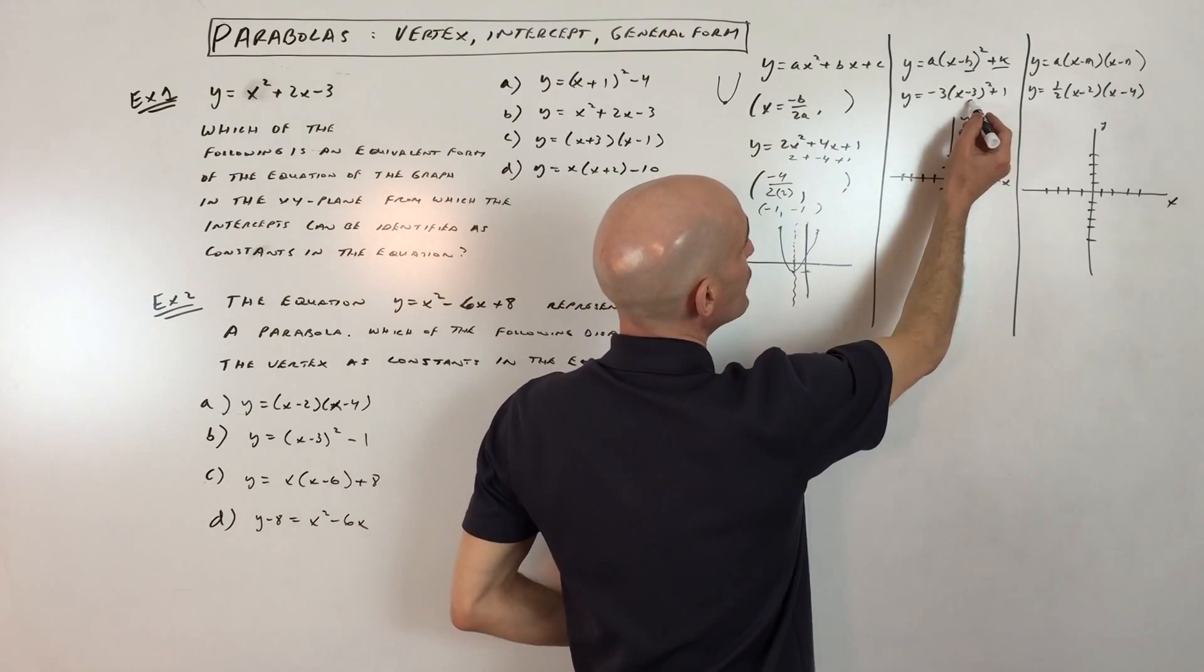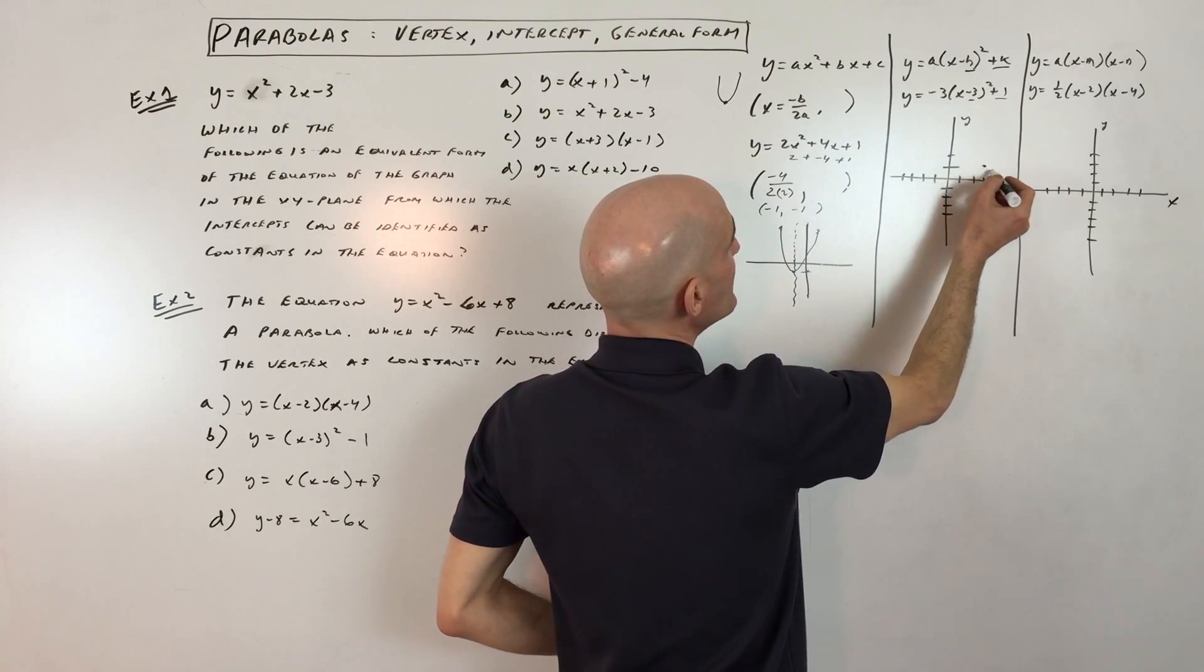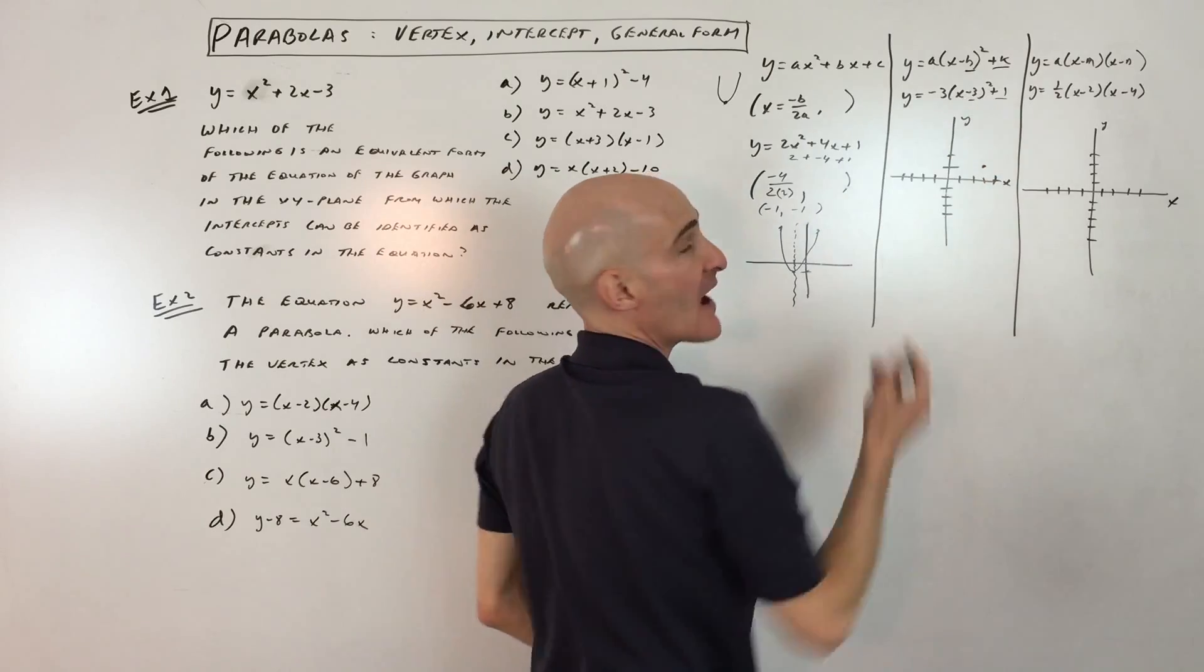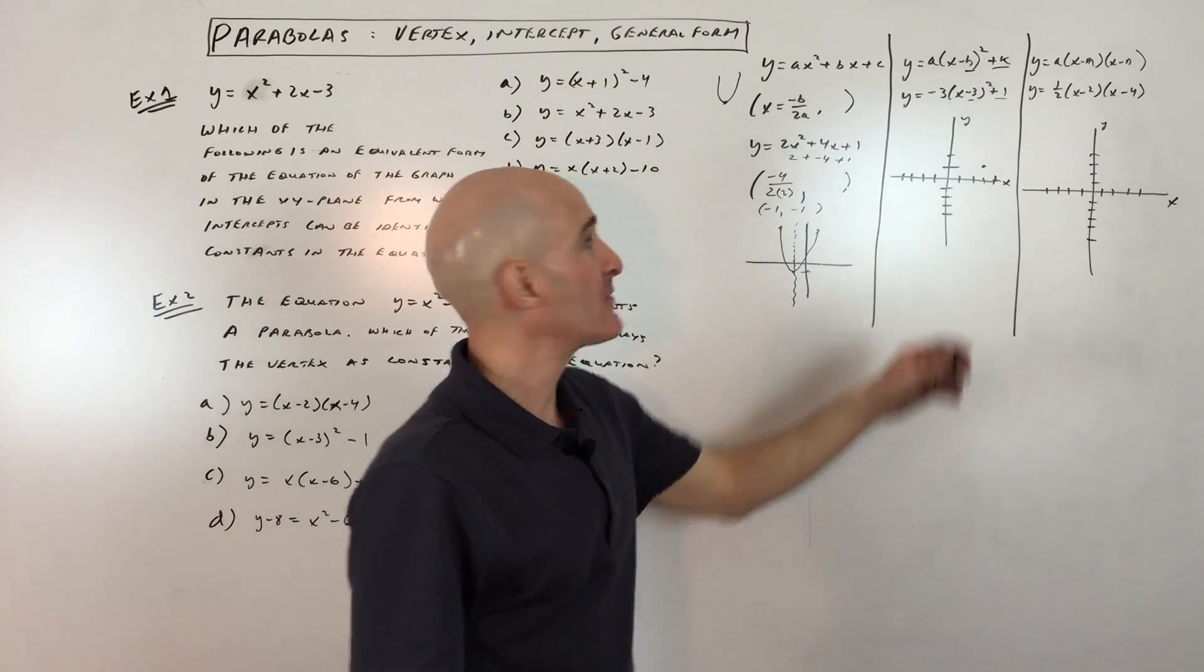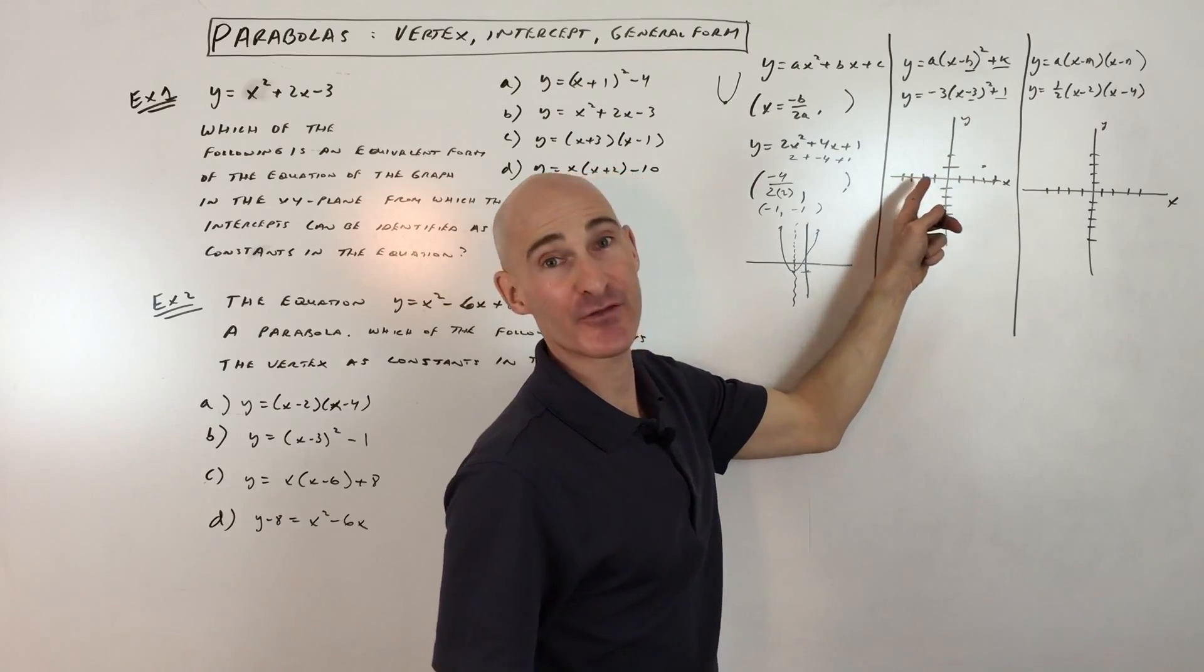So for this one, we can see that the vertex is at positive 3, positive 1, and notice that this one, the group of the x, has the opposite sign, the opposite effect. This is actually positive 3. If it was x plus 3, then it would be shifting left 3.